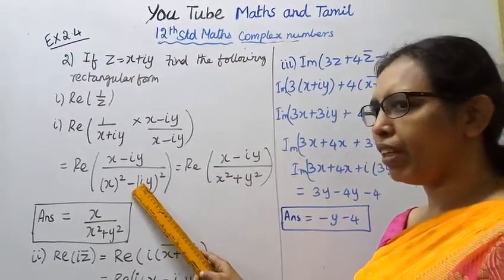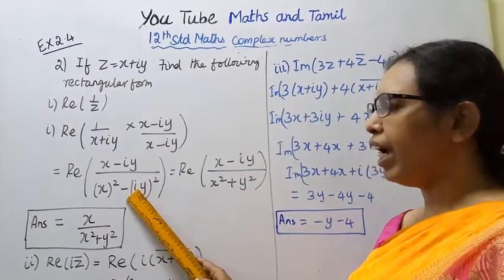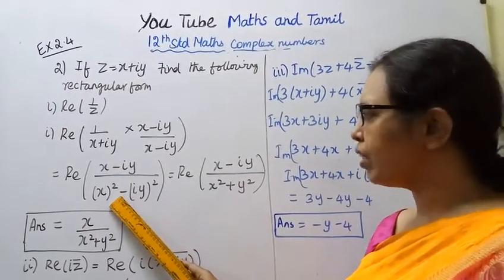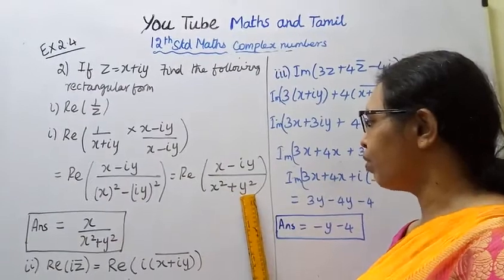This gives us x squared minus i squared y squared. The real part of (x minus iy) over (x squared minus i squared y squared). Since i squared equals minus 1, minus times minus gives plus, so we get x squared plus y squared.